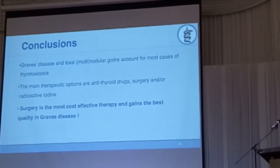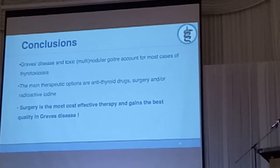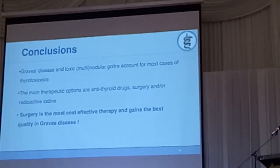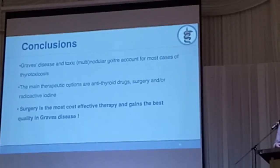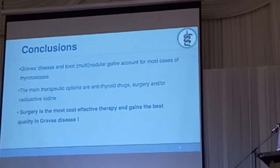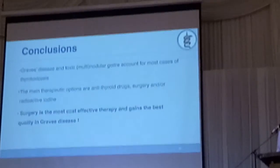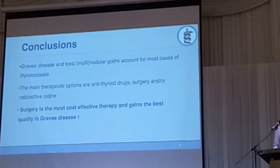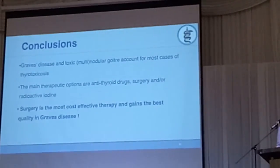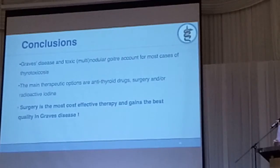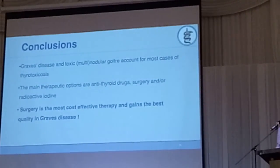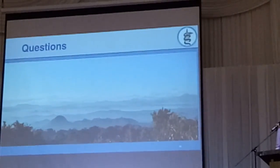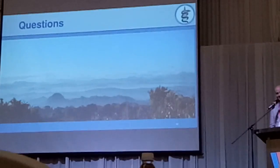In conclusion, Graves' disease and toxic multinodular goiter account for most cases of thyrotoxicosis. The main therapeutic options are anti-thyroid drugs first, then — depending on your local infrastructure — either radioactive iodine or surgery. But remember, surgery is the most effective therapy and provides the best quality of life for your patients. I've had patients the endocrinologist waited years to refer, and even those who had complications said they regretted not coming to surgery four or five years earlier — they felt better. Thank you very much for your attention.